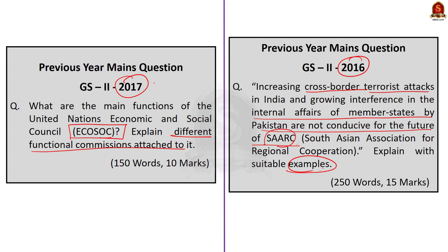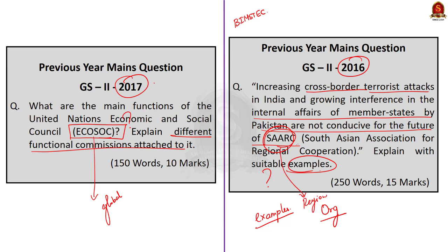You may be confused — we have taken an article related to BIMSTEC, where we are seeing questions regarding United Nations Economic and Social Council and SAARC. These are all examples of organizations: United Nations Economic and Social Council is a global organization, SAARC is a regional organization, and BIMSTEC is also a regional organization. You may expect such questions in your GS paper too, and the points we discuss in this editorial will be helpful for your mains preparation and can enrich your mains answer.